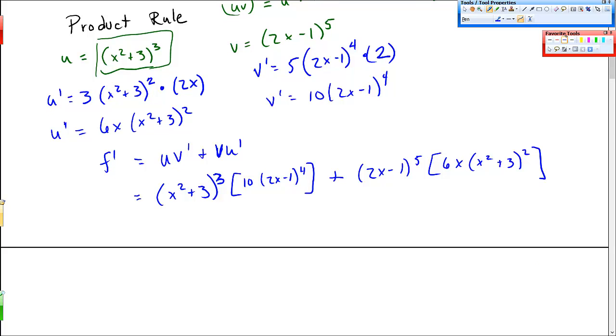Now, at no point can I combine any of this stuff, right? This 3 in the exponent prevents me from multiplying this by the 10. And the 4 here also prevents that multiplication. Same thing over in the second piece. But there's a lot of pieces that are the same. For example, I have repeated this x squared plus 3 piece there and there. So that can be factored out as a common factor to both of these big things.